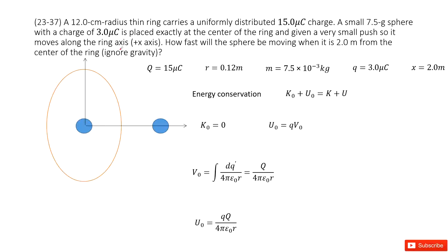In this system we have a thin ring. The radius is given as 0.12 meters. This ring carries a uniformly distributed charge Q. At the center, we have a small spherical object. Its mass and charge are both given, and it is placed at the center.